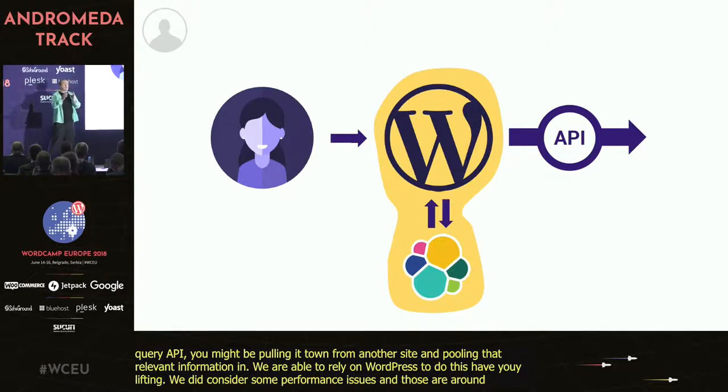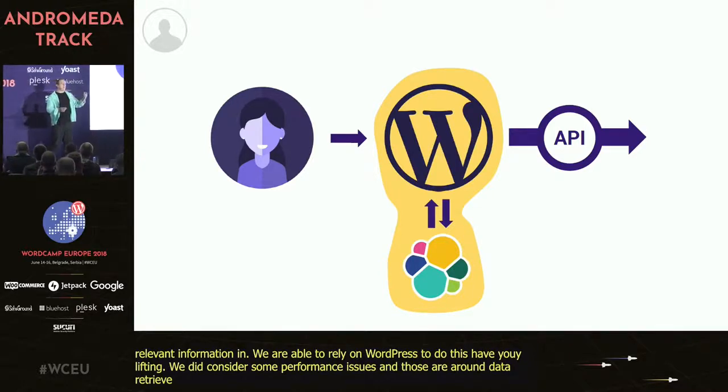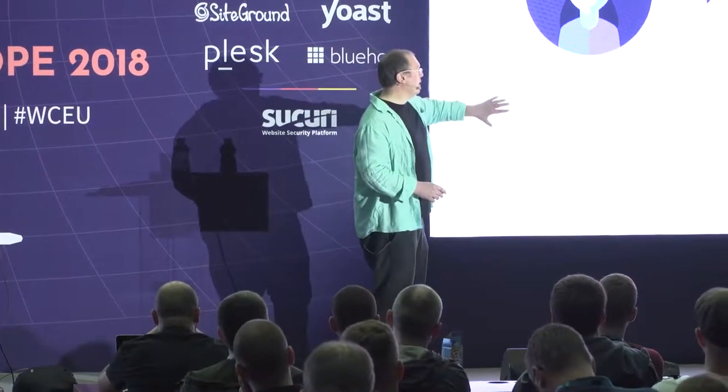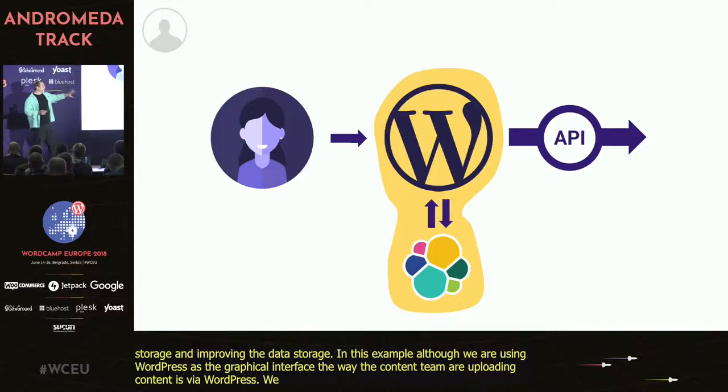We did consider some performance issues around data retrieval. When doing unique searches combining multiple parameters, we found quite slow performance. So we integrated with Elasticsearch — a flat distributed storage system which returns almost lightning-fast results. We were able to complement the WordPress architecture and improve the data storage. In this example, although WordPress is the graphical interface for uploading content, we've actually decoupled the front end — making it a headless CMS — and changed the storage system using an alternative.